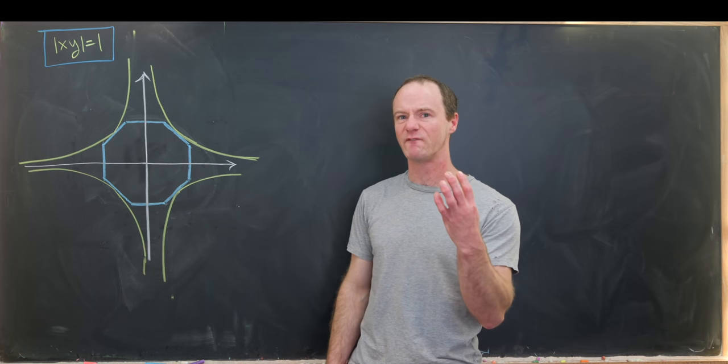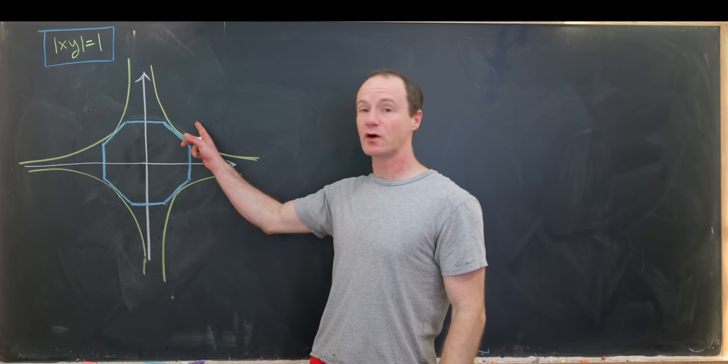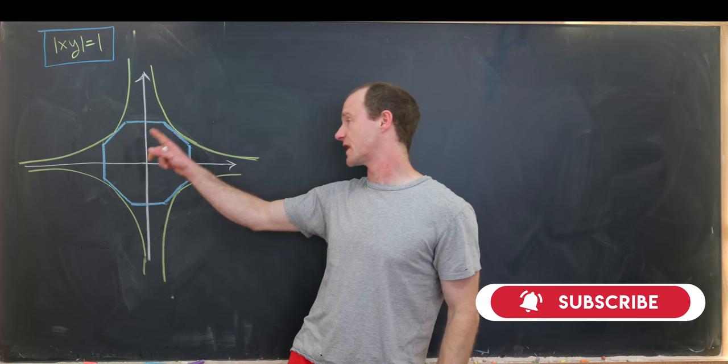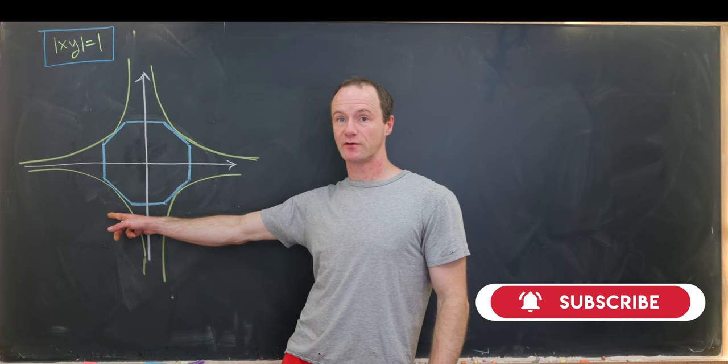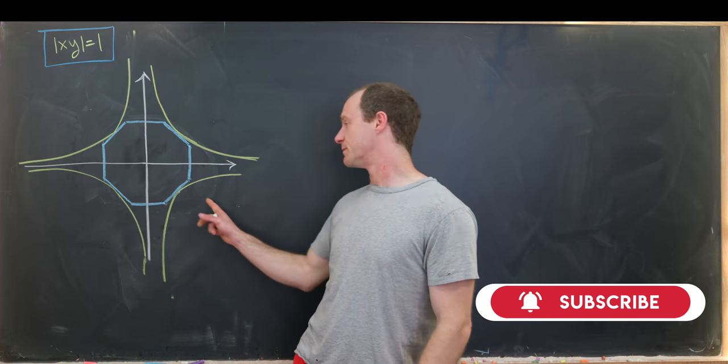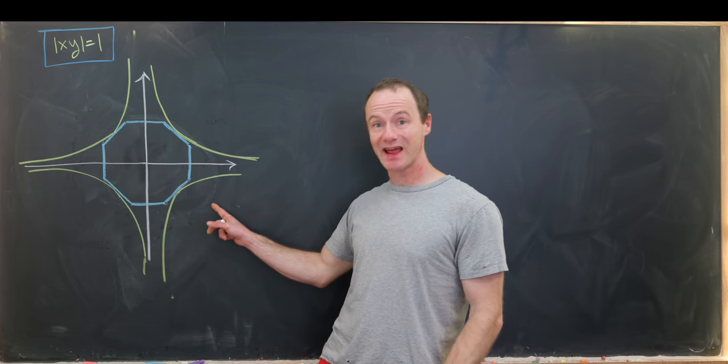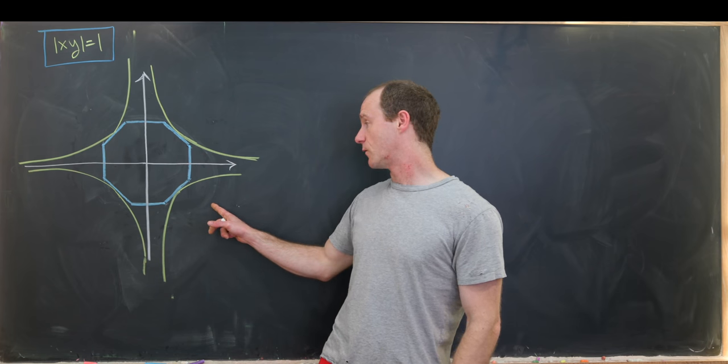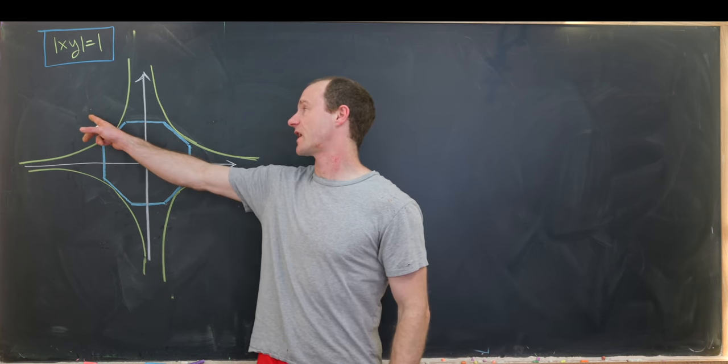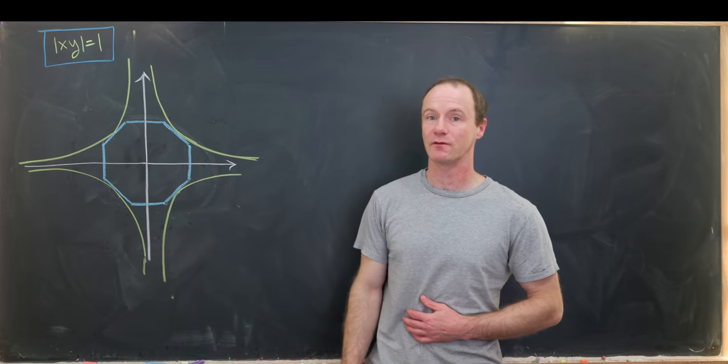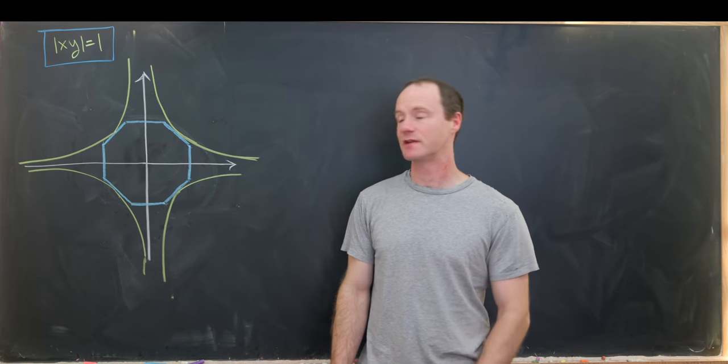Notice that has four branches. Over here we have y equals 1 over x for positive values of x. This is y equals 1 over x for negative values of x. This is y equals negative 1 over x for positive values of x. And finally this is y equals negative 1 over x for negative values of x.